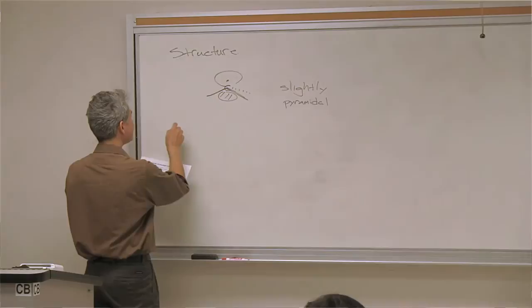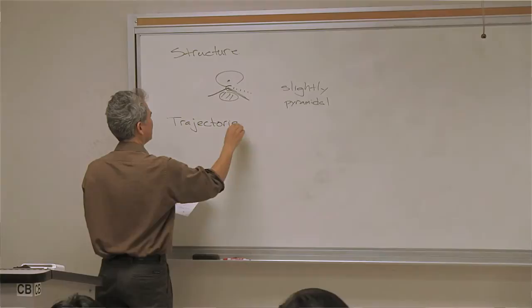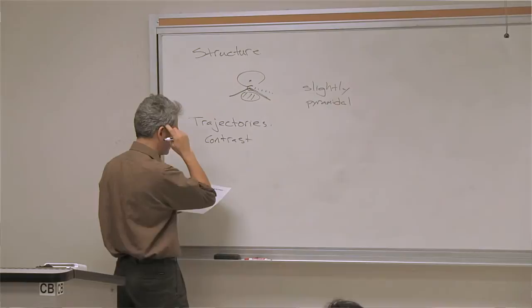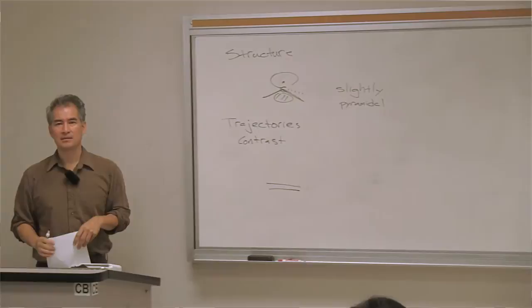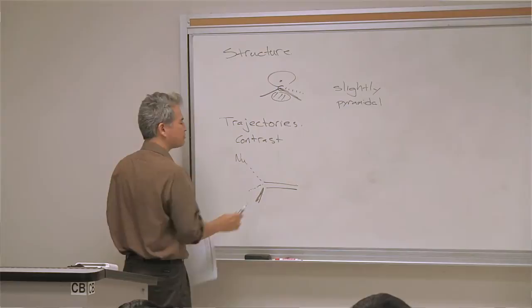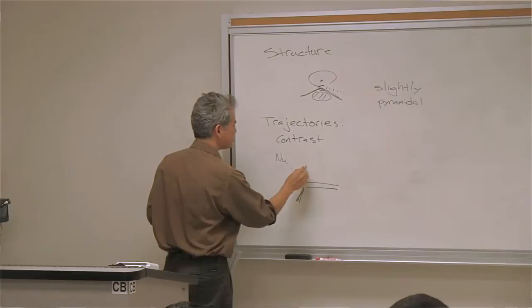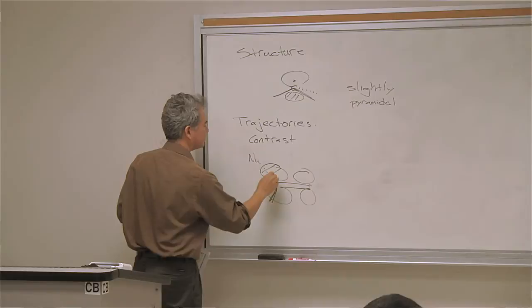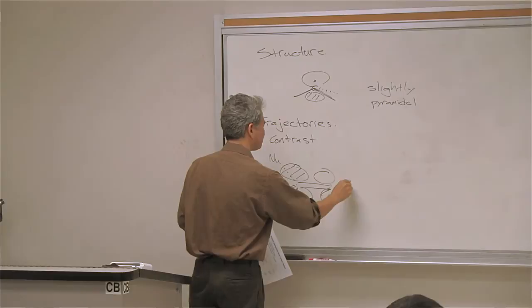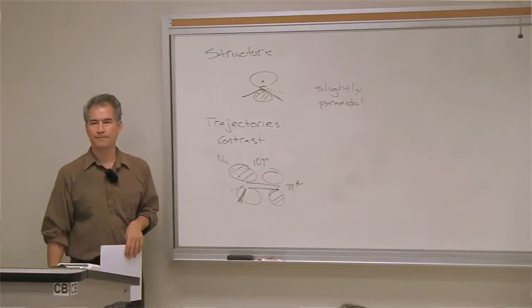Let's think about trajectories for addition of different species to pi bonds. For the addition of a nucleophile to a pi bond — something you learned last quarter — nucleophiles add from a 109-degree angle, called the Bürgi–Dunitz angle. The reason is that nucleophiles are adding to pi-star, and with the correct phasing you want to avoid the unhashed parts of the pi-star orbital, so you come in from that 109-degree angle.